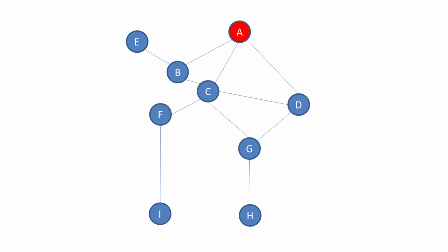Starting with vertex A, we follow a path until we can go no further. Now we backtrack, and as we do so, we ask if there are any more paths to explore. Here we can see there's another path which we will explore until it's exhausted. And then we backtrack again, until such time as we find another path to explore.